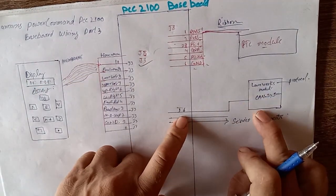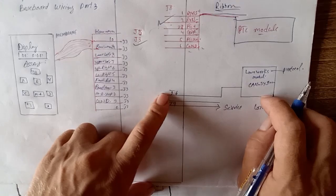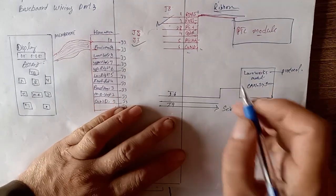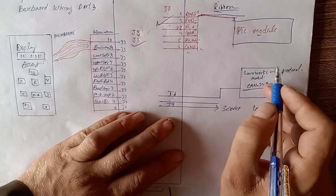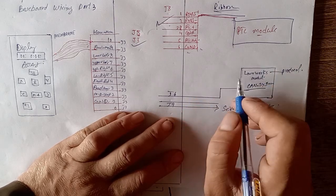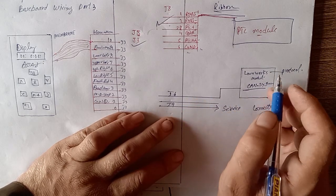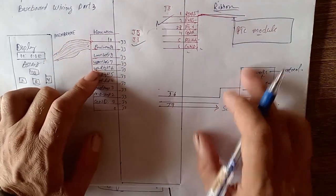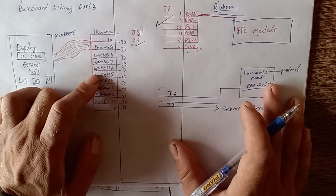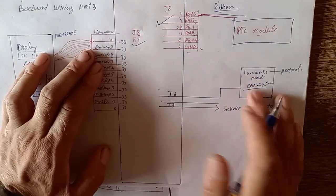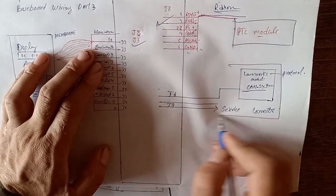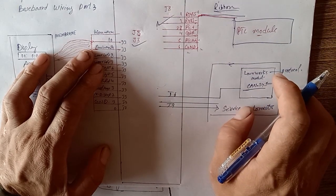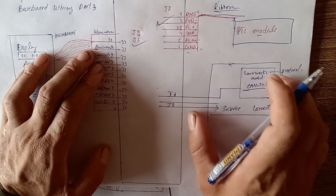J7 has been cleared. J6 is going to the Lonworks module CAN system. This is the CAN communication protocol. All the components and all the circuits communicate with each other. This is the complete CAN communication system.